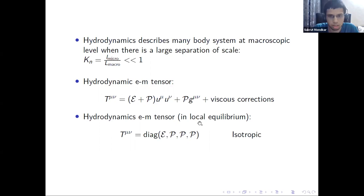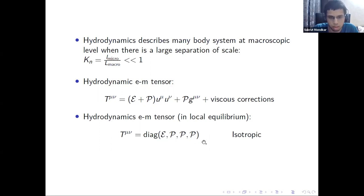When the system is in equilibrium, in the rest frame of the fluid, the energy-momentum tensor takes a diagonal and isotropic form. Any anisotropies are essentially due to the viscous corrections.